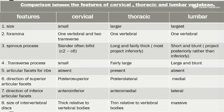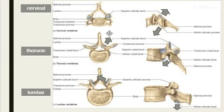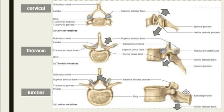The spinous process of cervical is slender and often bifid from C2 to C6. For thoracic, it is long and fairly thick and mostly projects inferiorly. For lumbar, it is short and blunt and projects posteriorly rather than inferiorly. Here we can see the bifid spinous process for cervical, the inferiorly directed one for thoracic, and the short blunt posteriorly directed one for lumbar.